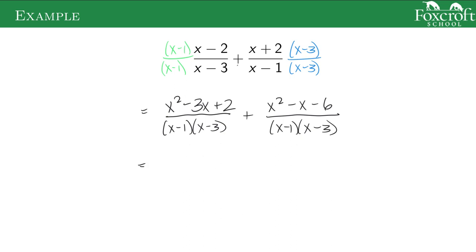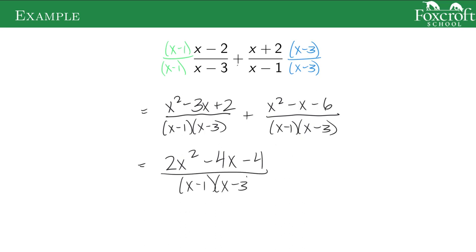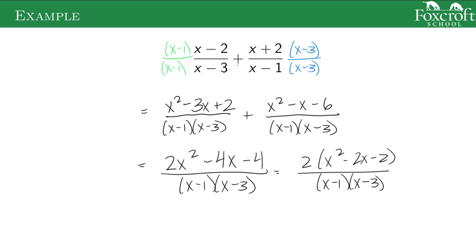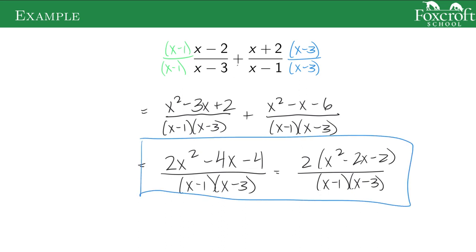Since it's addition it's a little easier — you don't have to worry about distributing a negative. So x squared plus x squared is 2x squared; negative 3x minus 4x is negative 4x; and 2 plus negative 6 is minus 4 — all over x minus 1 times x minus 3. That's the right answer after combining, but maybe we can simplify. All the numbers on top are even so we could factor out a 2. Then we check if the quadratic factors — we'd need two numbers that multiply to negative 2 and add to negative 2, which isn't possible, so this is our final answer.